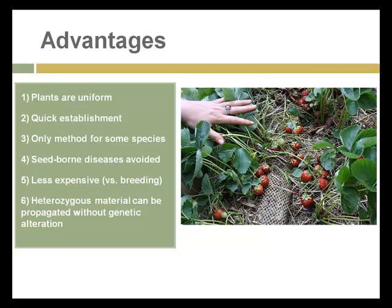Indeed, asexual propagation is the only method for some species. One great example is bananas — the bananas we get in stores are seedless, and the only way to propagate those banana plants is through cuttings. That has some advantages but also some disadvantages that we'll get to.